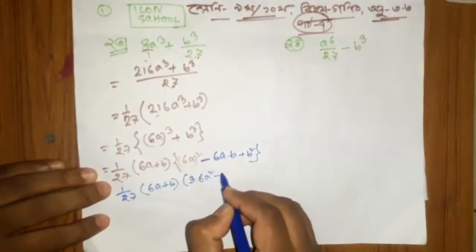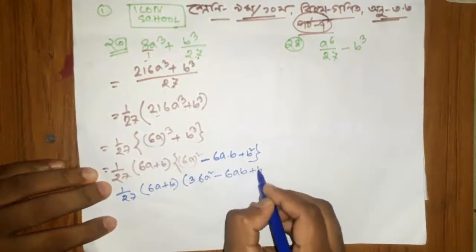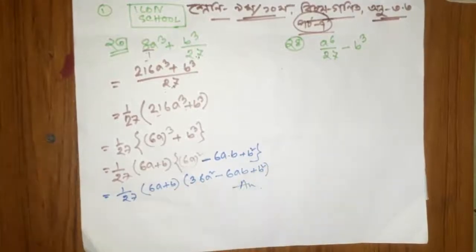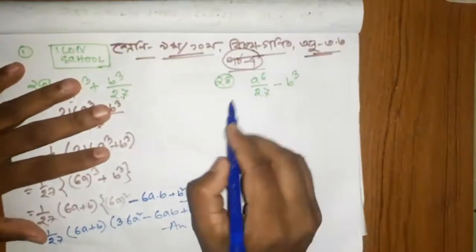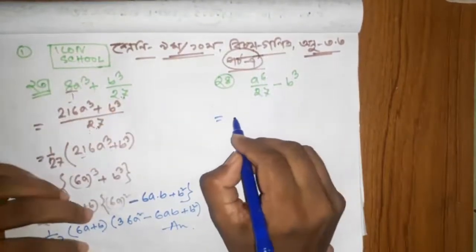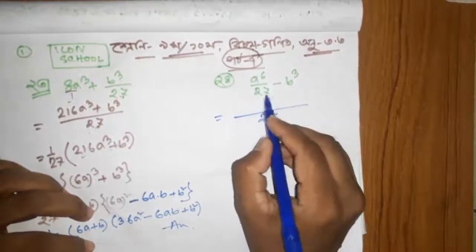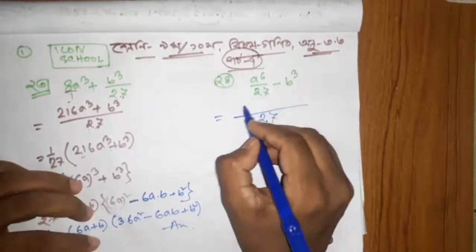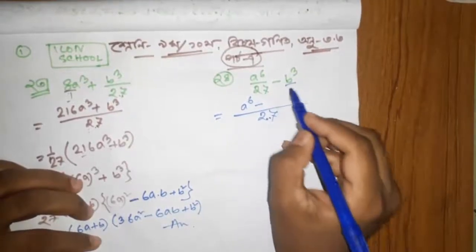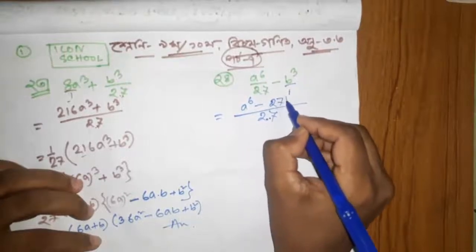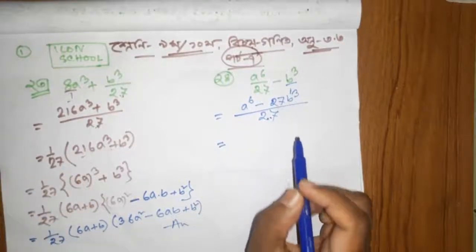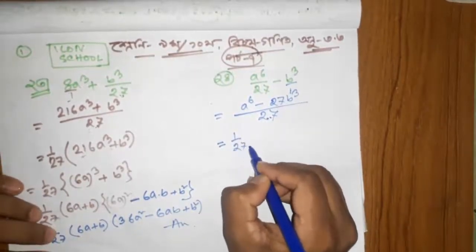a square minus 6ab plus b square — 8 answers. Then b square minus ab plus b, choice 13, a square minus ab plus b, choice 13. a square minus ab plus b, choice 13. Then 1 by 27 — I will add 1 by 27.